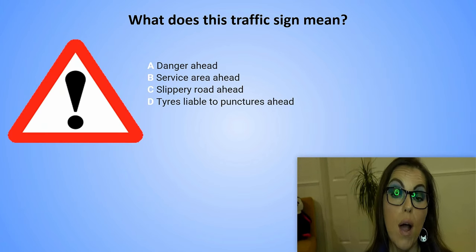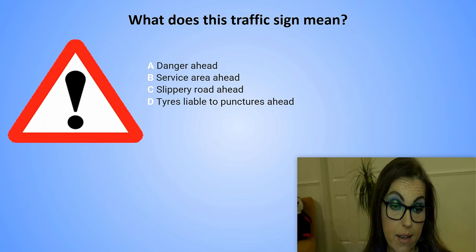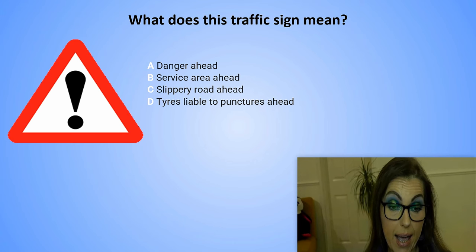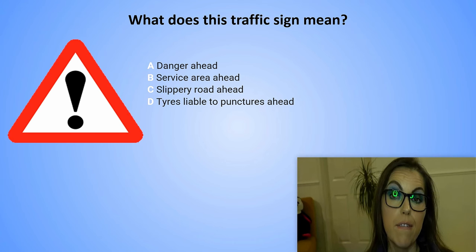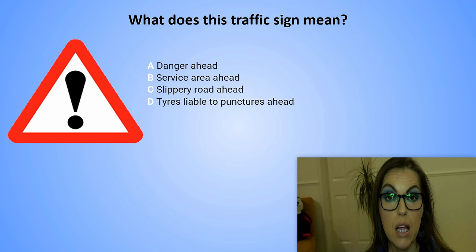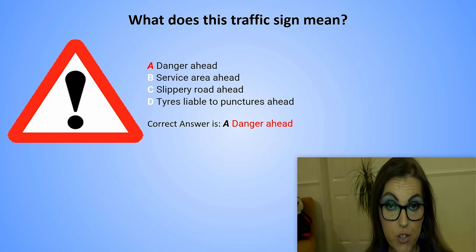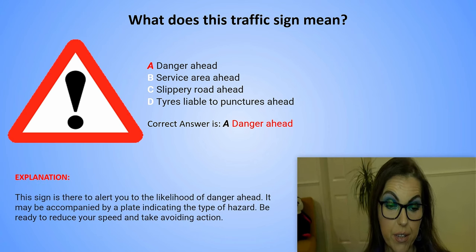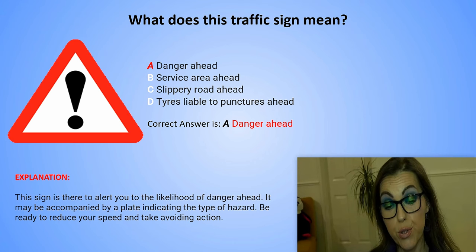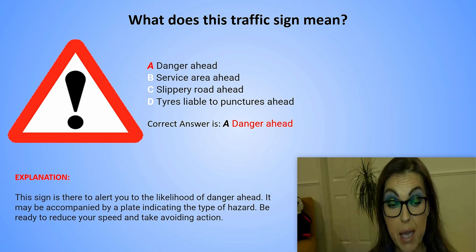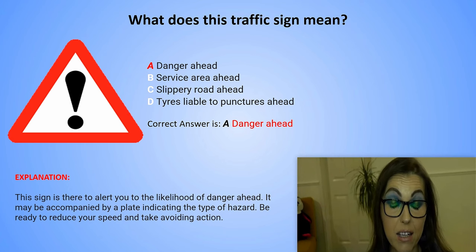What does this traffic sign mean? A. Danger ahead. B. Service area ahead. C. Slippery road ahead. D. Tyres liable to punctures ahead. The correct answer is A. Danger ahead. Explanation: This sign is there to alert you to the likelihood of danger ahead. It may be accompanied by a plate indicating the type of hazard. Be ready to reduce your speed and take avoiding action.